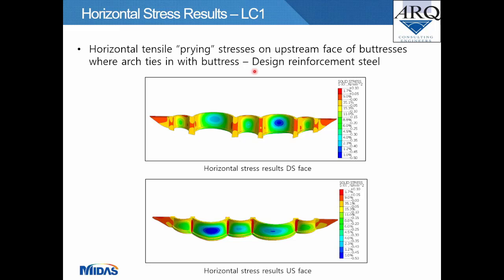Horizontal stress results for Load Case 1: horizontal tensile prying stresses are indicated on the upstream faces of the buttresses where the arches tie in. This therefore required the design of reinforcement steel on the upstream faces of the buttresses at the arch tie-in locations. Images show horizontal stress results on both downstream and upstream faces.